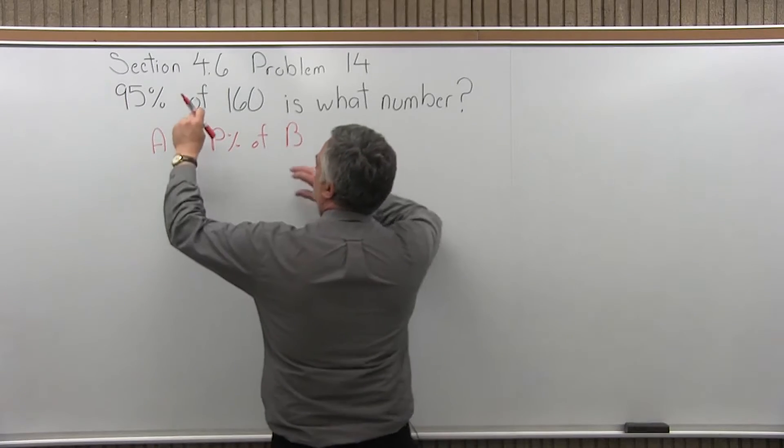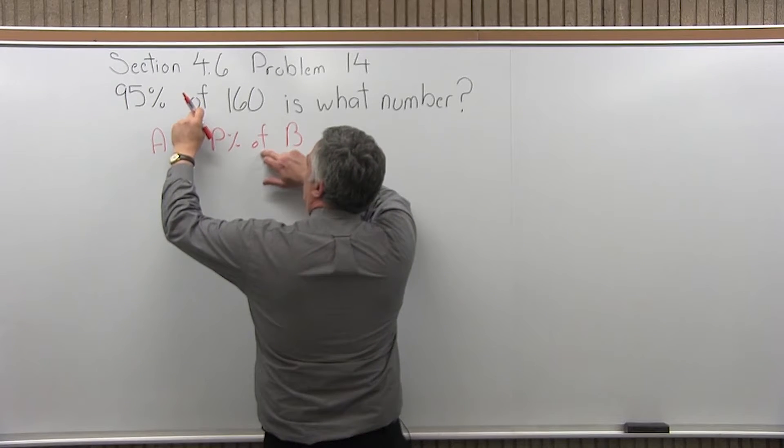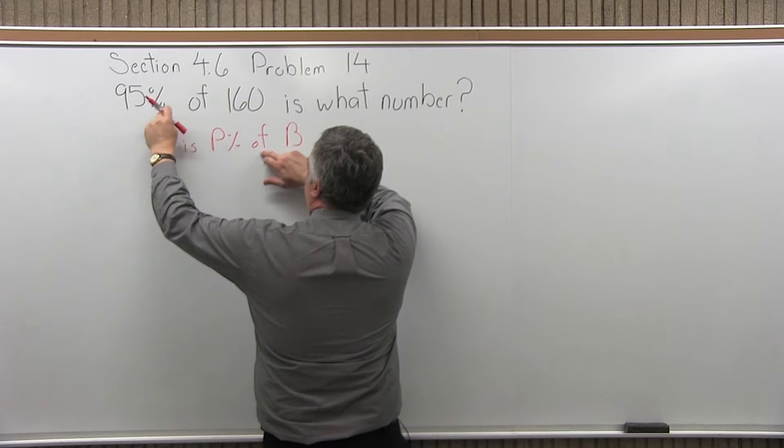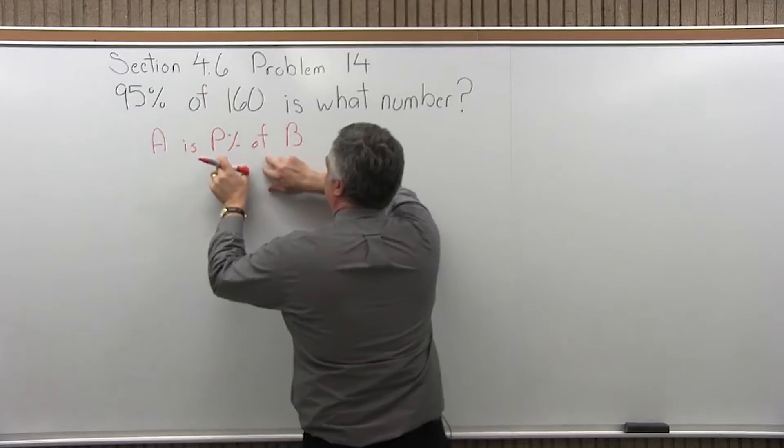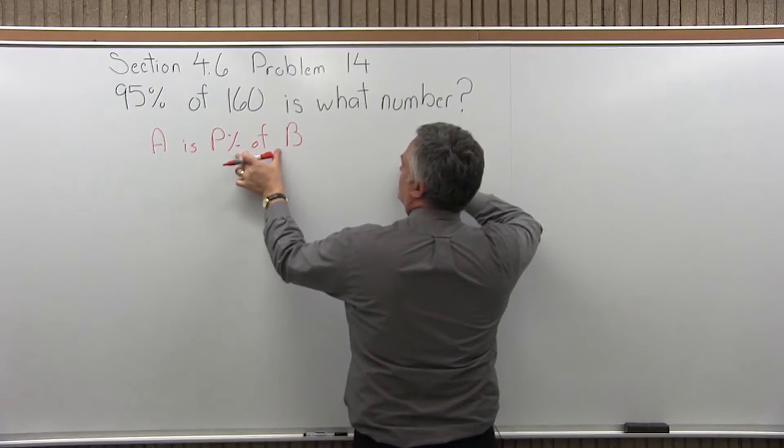So what you want to do is lock into the word of, and what's to the left and right has to stay with it. So 95% of 160 has to go to the right portion of our sentence.